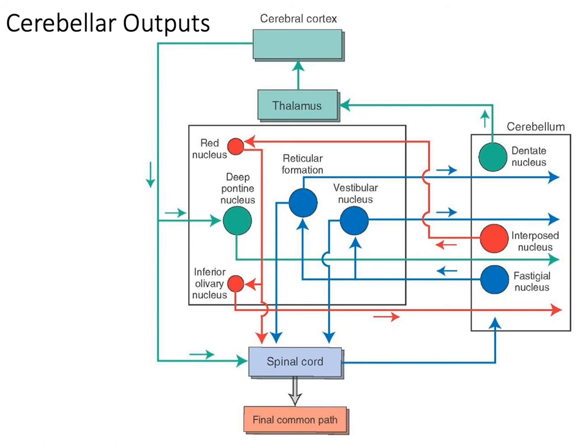Here is a flow chart provided to help organize the information. On the right side you have the deep cerebellar nuclei and you can trace them for their outputs and inputs. Whichever method works best for you to memorize the information, this flow chart is just another resource to help organize it.